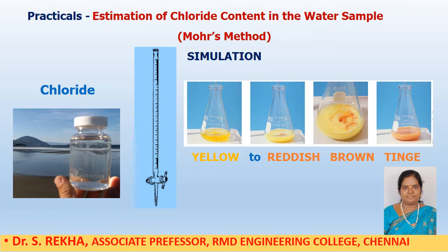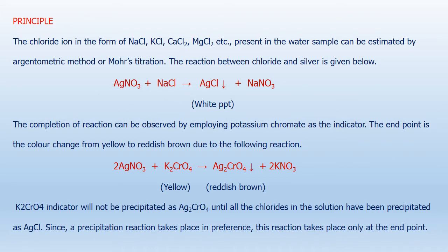Let us get into the titration part. The principle behind it: chloride ions in the form of NaCl, KCl, calcium chloride, magnesium chloride, etc., may be present in water samples and need to be estimated by either the argentometric method or by Mohr method. The argentometric method uses silver nitrate solution, and Mohr method also uses silver nitrate solution for estimation of chloride.